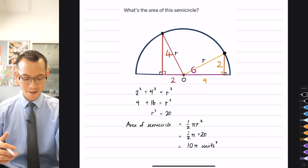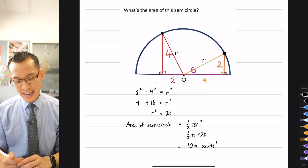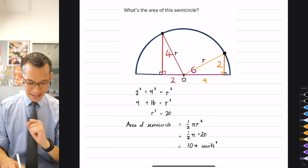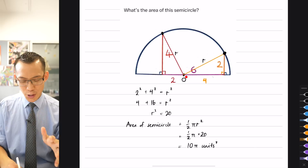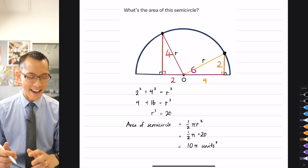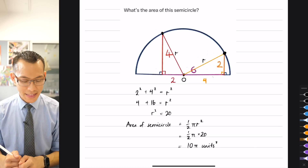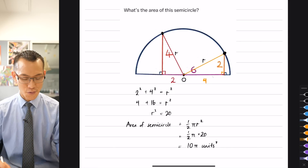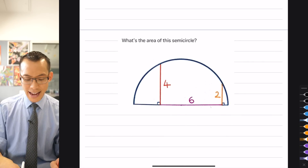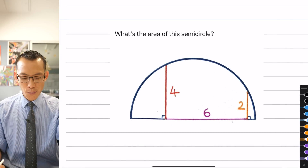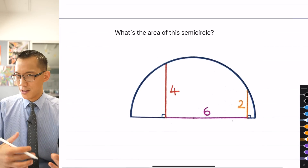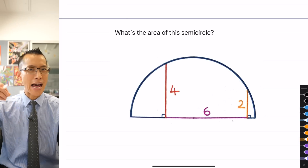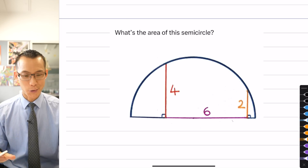Maybe you're thinking: that trick with the congruent triangles — picking a spot that was 2 + 4 = 6 — I didn't see that at all. Don't feel bad, because when I first solved this problem I didn't see it either. So I went about it a different way. It takes slightly more working, but not a lot more, and you don't have to pull that mystery rabbit out of a hat with the congruent triangles.